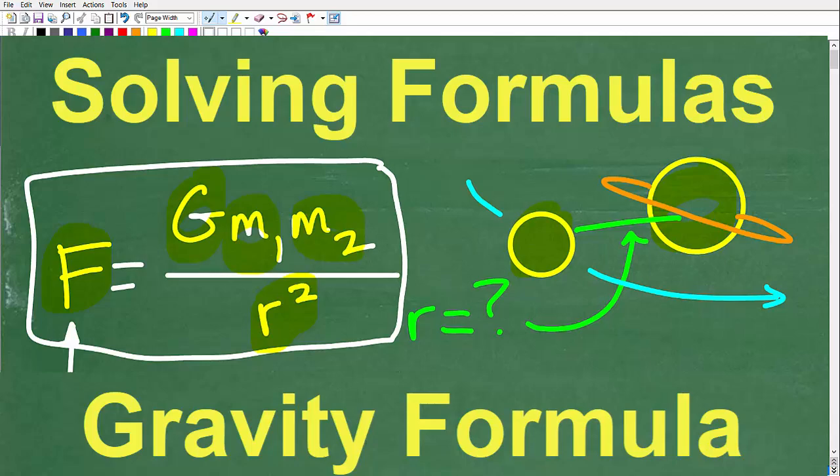The formula is gravitational force is equal to the gravitational constant G times mass one times mass two, divided by the radius squared. That is the gravitational force. And actually, I love physics. If I didn't get my degree in mathematics, I would have been into physics. So physics is awesome.